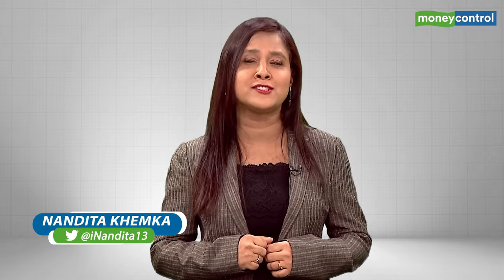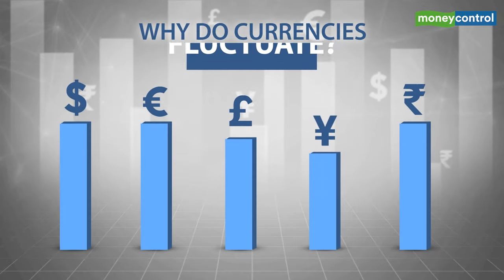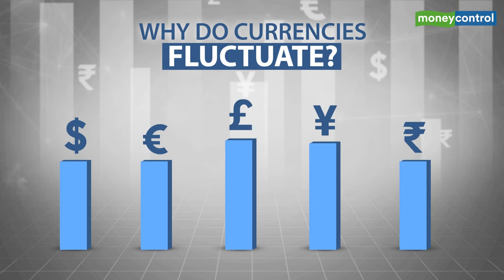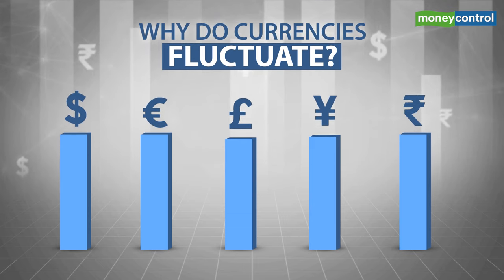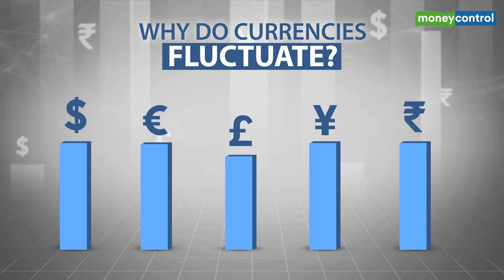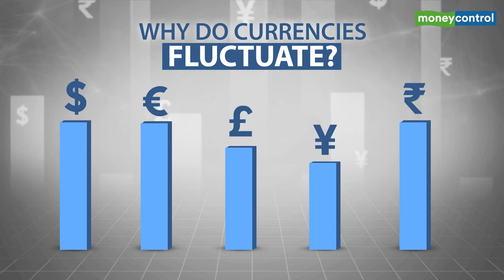We all know that the rupee had recently crashed to historic lows against the US dollar and hit the dreaded 80 mark for the first time ever. But have you ever wondered what are the factors that lead to so much fluctuation in currency values? Who decides how much a rupee's value is against the dollar and why does it keep changing? You will know all the answers in the next five minutes.